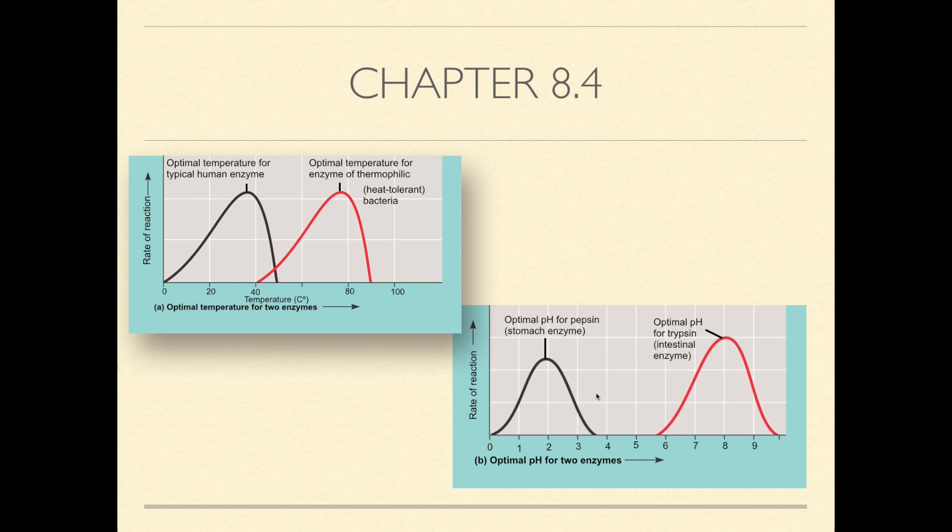With pH, most enzymes fall in the range of pH 6 to 8. But there are exceptions such as pepsin, which is a digestive enzyme in the stomach and that works best at a pH of 2. And there is trypsin, which is also a digestive enzyme that works best at a pH of 8. So with pH, it just depends on what type of enzyme it is.